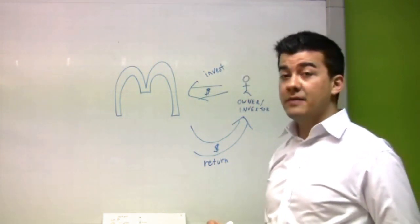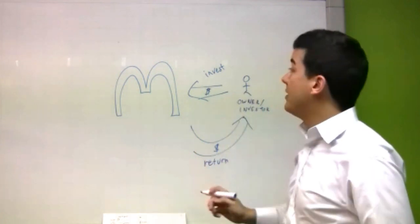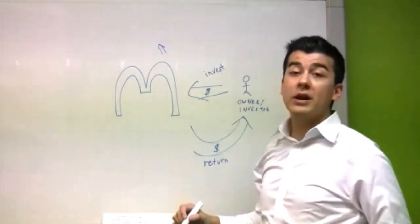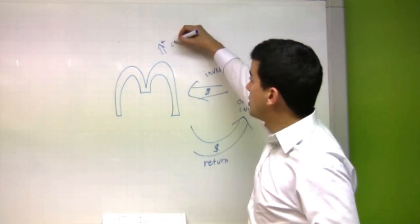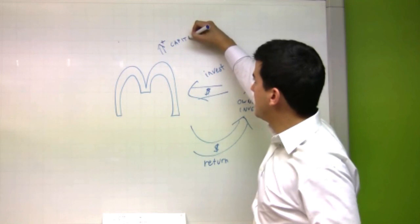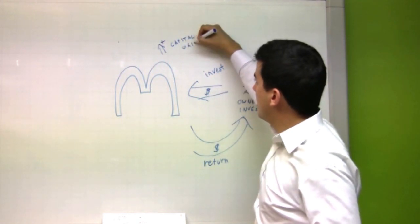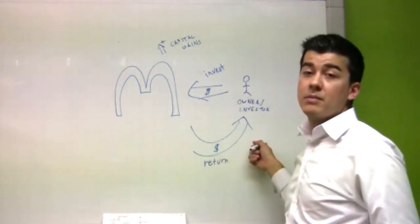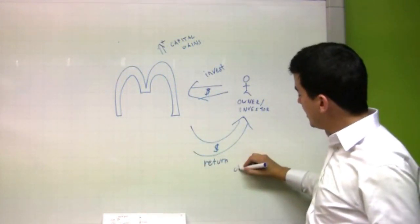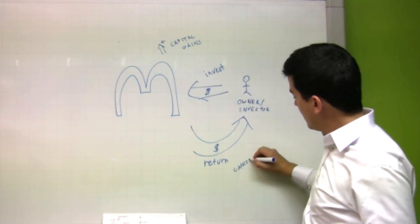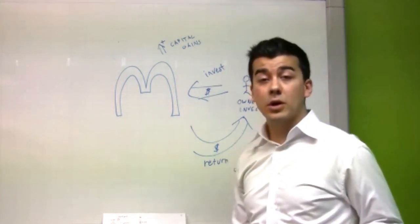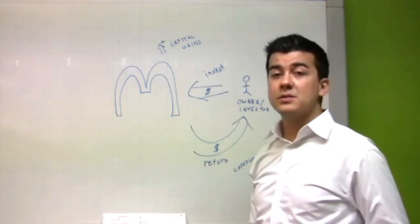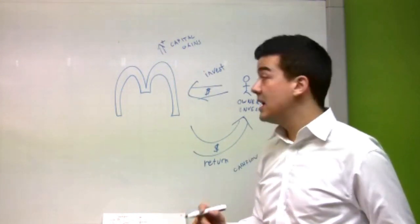There's two reasons an investor invests. They either invest for the value of whatever they're investing in going up, which is called capital gains, or they invest for a steady income, which is known as cash flow. So there are two important words to remember: capital gains and cash flow. The two reasons why an investor invests in a business.